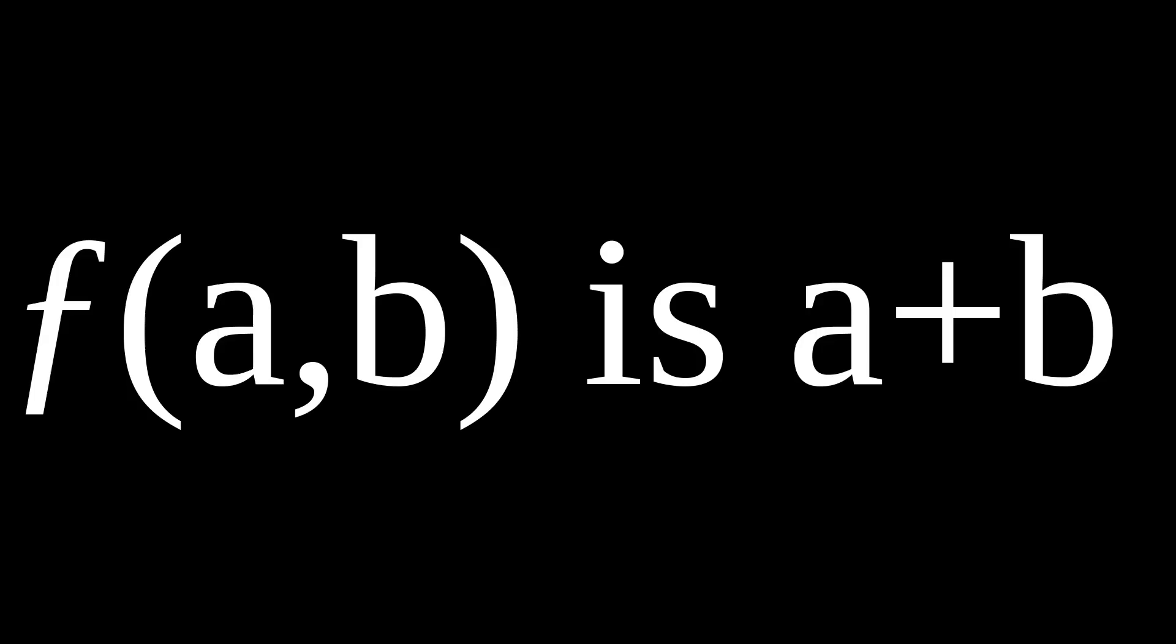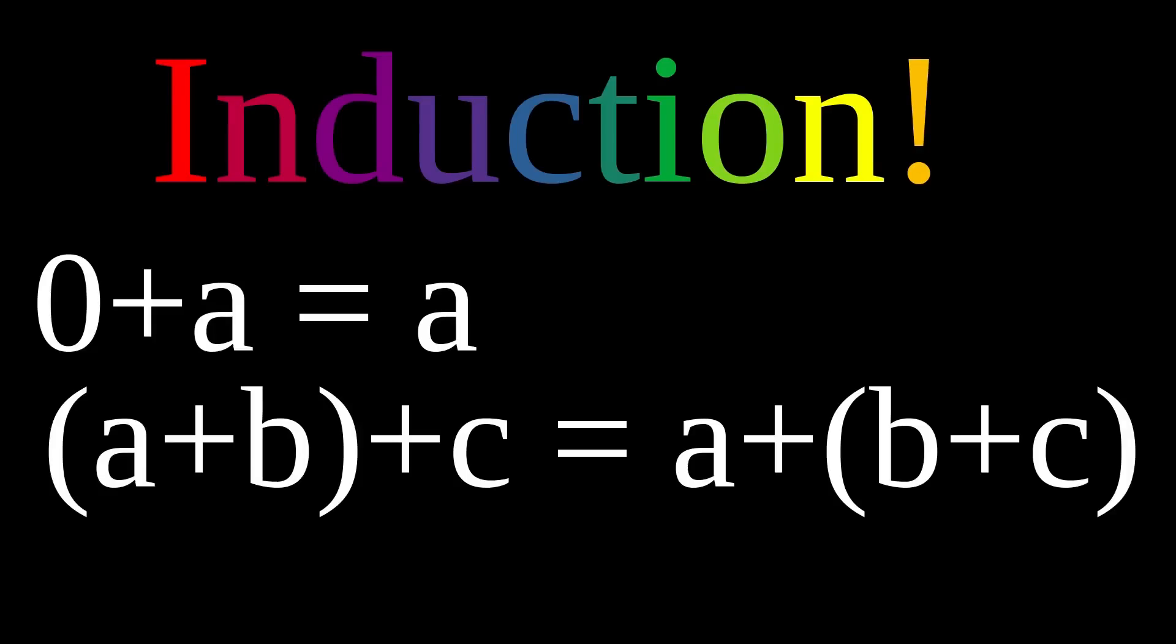Our mystery function takes the successor of a exactly b times—it adds b to a. f is just addition. And if you're a nerd, you can use induction to prove that it has all the properties you already know it does, such as zero doing what zero does, and associativity and commutativity.